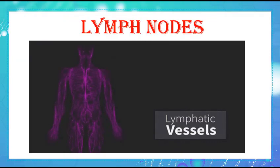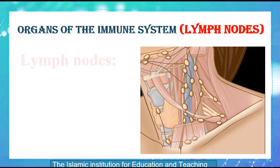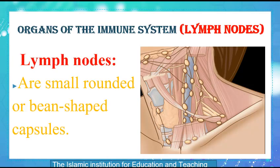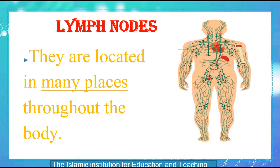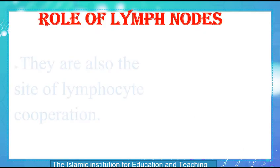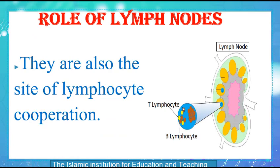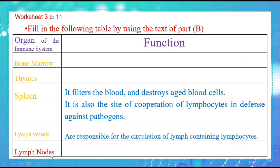Lymphatic vessels link a large number of lymph nodes together in the body. The lymph nodes are small rounded or bean-shaped capsules located in many places throughout the body. Please locate the lymph nodes in the adjacent figure. The role of lymph nodes is also the site of lymphocyte cooperation in the defense against pathogens, as in the case of the spleen. Pathogens encounter lymphocytes in lymph nodes, which then cooperate in the defense. Please open your worksheets, page 11, and complete the table with the function of lymph nodes.